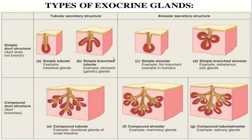To summarize the types: simple tubular, simple branched tubular, simple alveolar, simple branched alveolar, compound tubular, and compound alveolar. Specific examples: compound tubular glands are found in the duodenal glands of the small intestine; compound alveolar glands are the mammary glands; and compound tubulo-alveolar glands are the salivary glands.